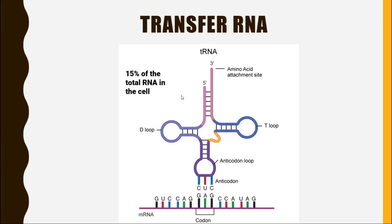The structure of transfer RNA consists of four different arms. The first arm is called the acceptor arm, as it can accept the amino acid on its three prime end.